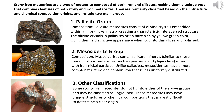These meteorites may have unique structures or chemical compositions that make it difficult to determine a clear origin. The analysis of stony-iron meteorites often requires specialised techniques such as mass spectrometry for determining chemical composition and electron microscopy for observing crystal structure and mineral content.